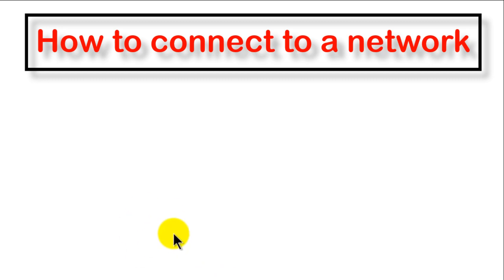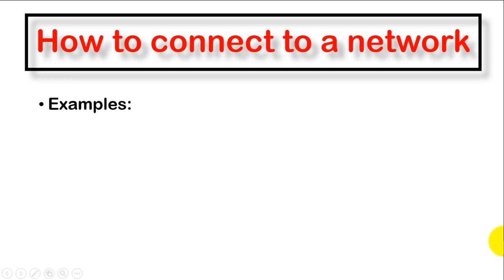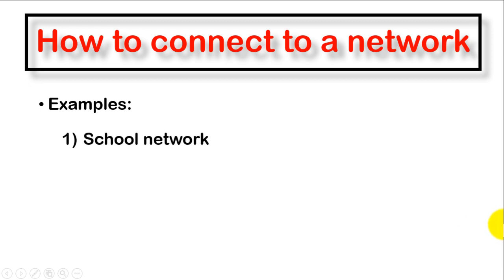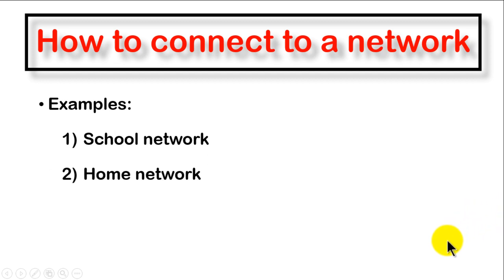Now let's talk about examples in real life of how we can connect to a network. We are going to cover two examples: number one is the school network — how you access the network at your school — and number two is the home network, when you bring a router home and need to access the internet.